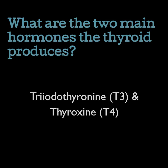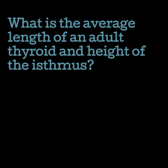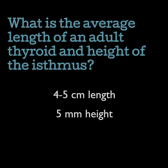Too much of these hormones in the body results in hyperthyroidism, or too little results in hypothyroidism. What is the average length of an adult thyroid and height of the isthmus? The lobes, on average, measure between 4 and 5 centimeters, but can be normal up to 7 centimeters. The height of the isthmus should be less than 5 millimeters. When the isthmus height exceeds 1 centimeter, or 10 millimeters, the entire thyroid is considered enlarged.